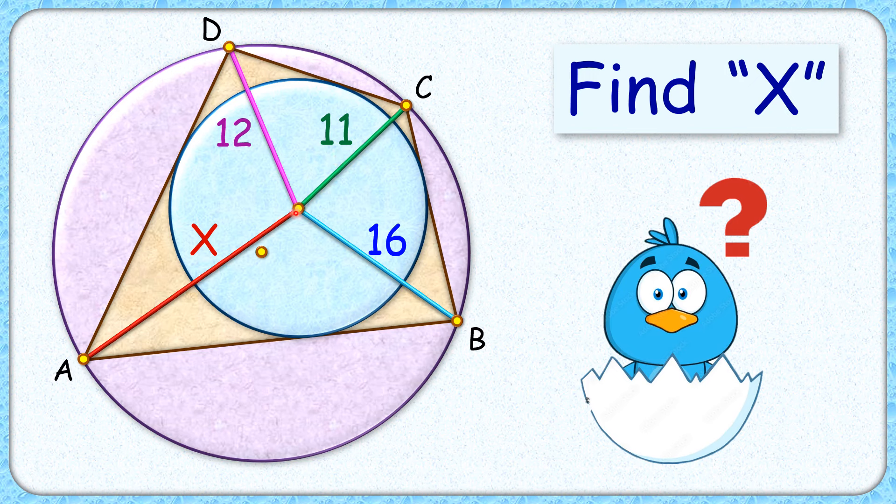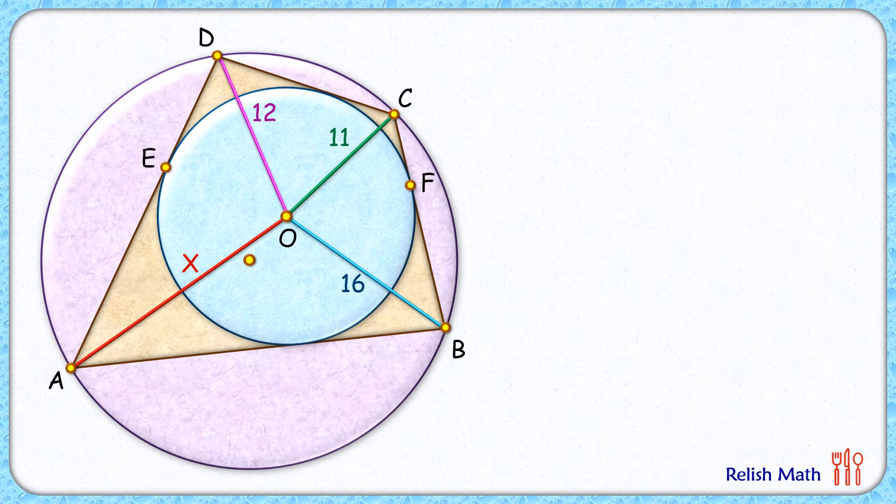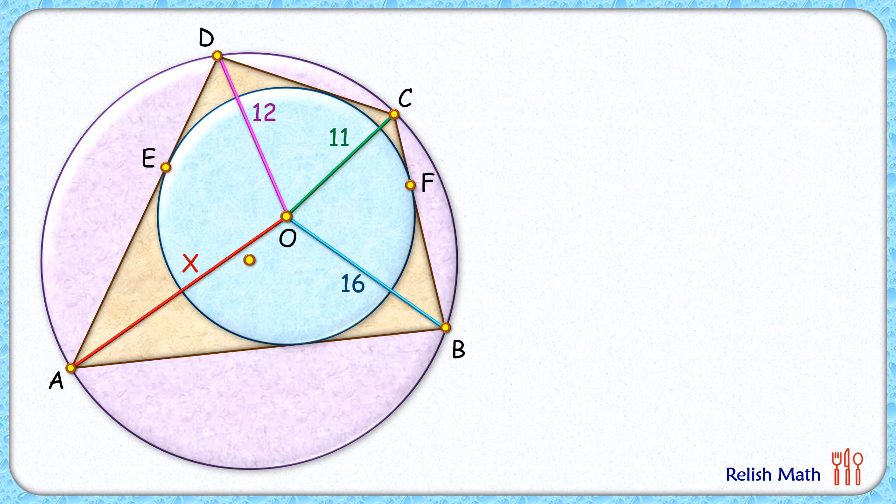Let's check the solution. Here ABCD is a cyclic quadrilateral with respect to this purple circle. In a cyclic quadrilateral, the opposite angles are supplementary. So if we assume this angle D as 2α, then this angle B will be 180° - 2α. Same way, if this angle A is 2β, then this angle C will be 180° - 2β.